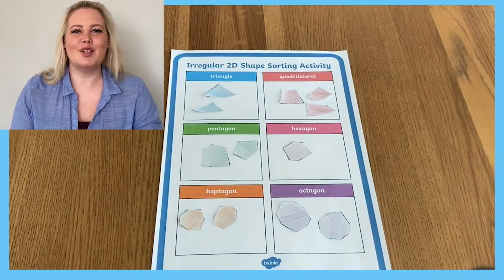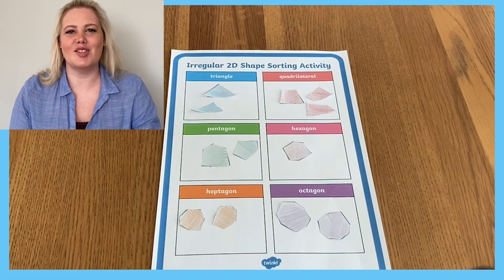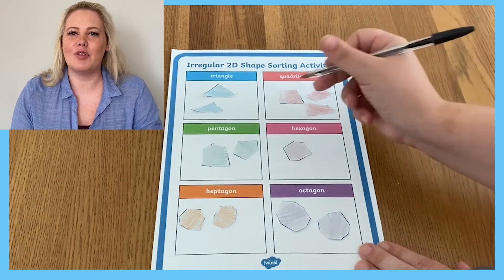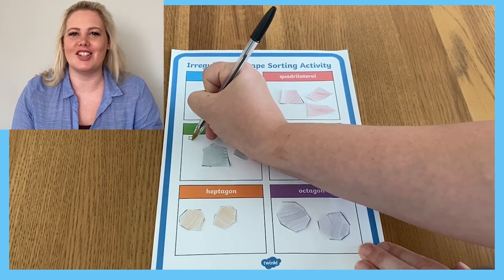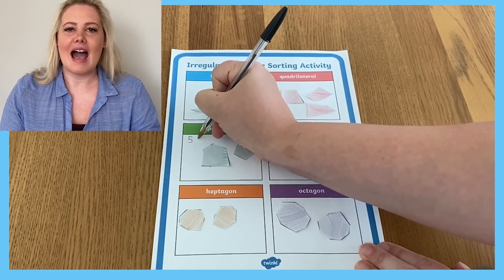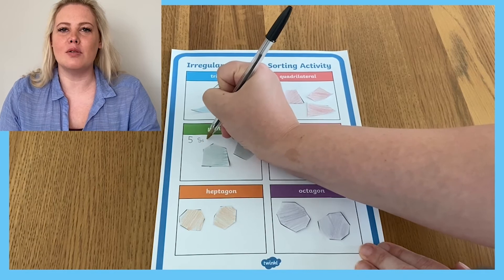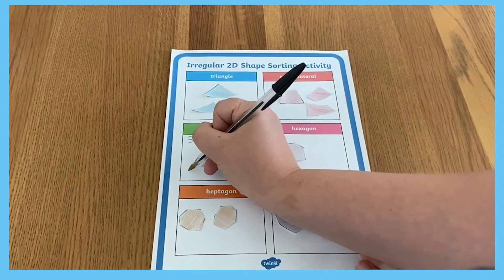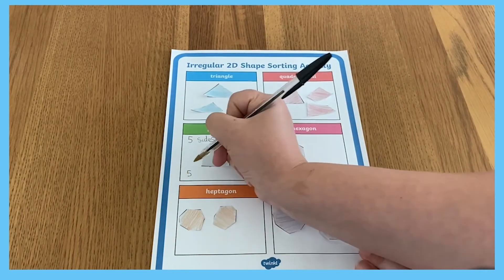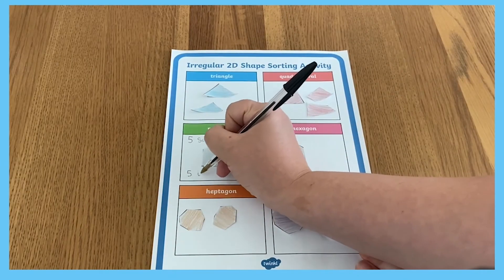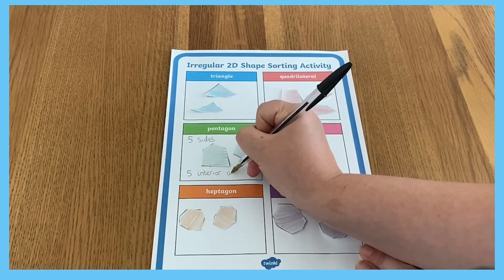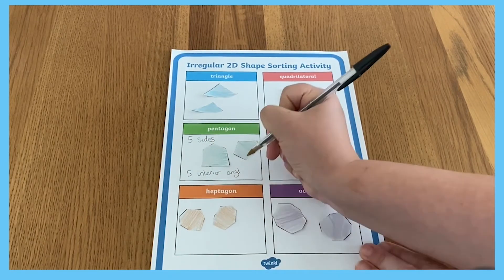Improve learners' confidence as mathematicians further by asking them to explain how they identified and sorted each shape. Ask them to note down what they know about each shape. For example, an irregular pentagon has five sides and five interior, or inside, angles.